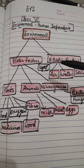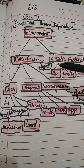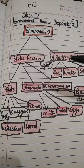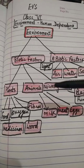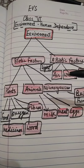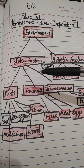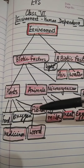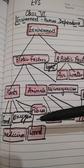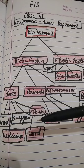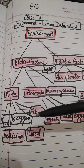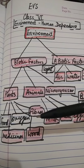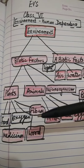Biotic components or factors are plants, animals, and microorganisms. Plants provide us with food, oxygen, fibers, spices, medicines, wood, etc.